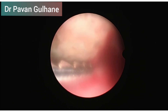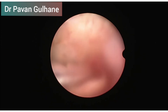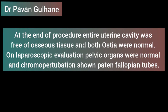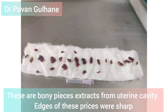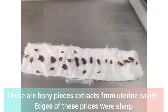Post hysteroscopy we can give estrogen therapy to the patient for normal healing of the endometrium. At the end of the procedure the entire uterine cavity was free of osseous tissue and both ostia were normal. Laparoscopic evaluation was suggestive of bilateral patent fallopian tubes and normal pelvic organs. You can notice the number of bony pieces taken out of the uterus. Two months after the procedure, the patient conceived and delivered a healthy child after 9 months.